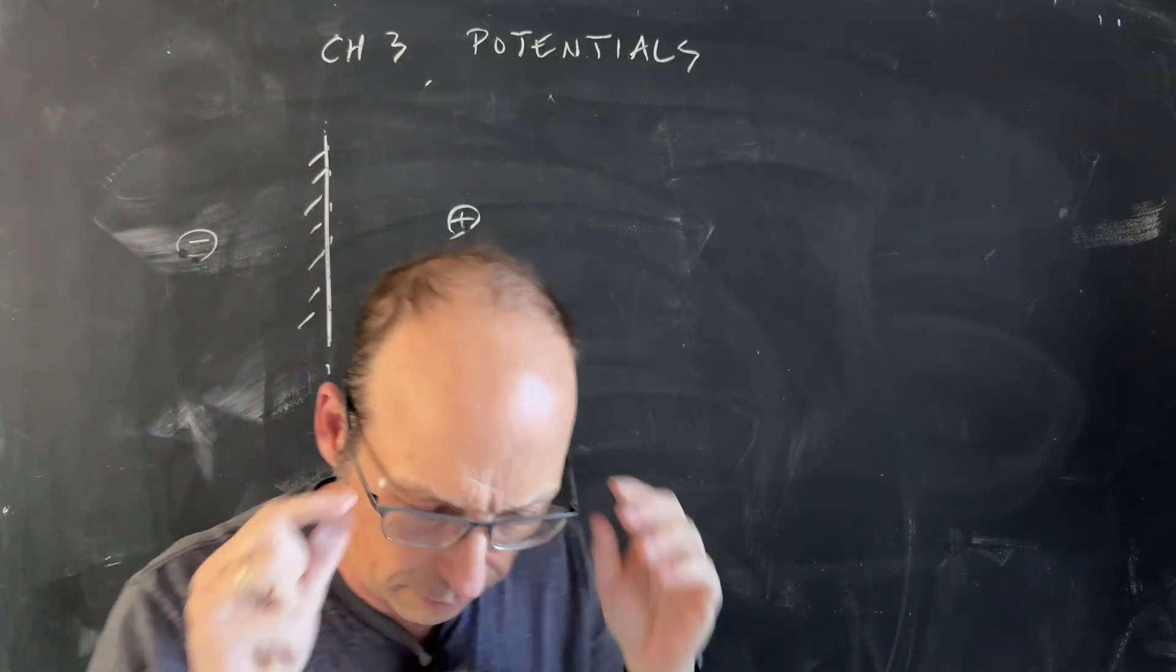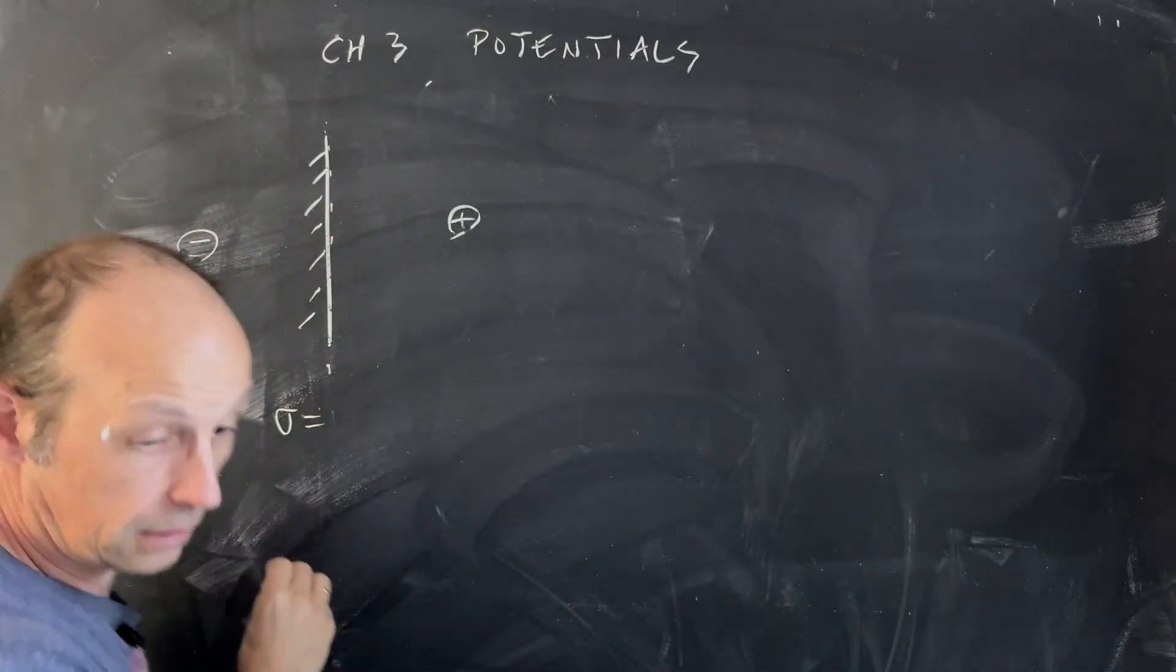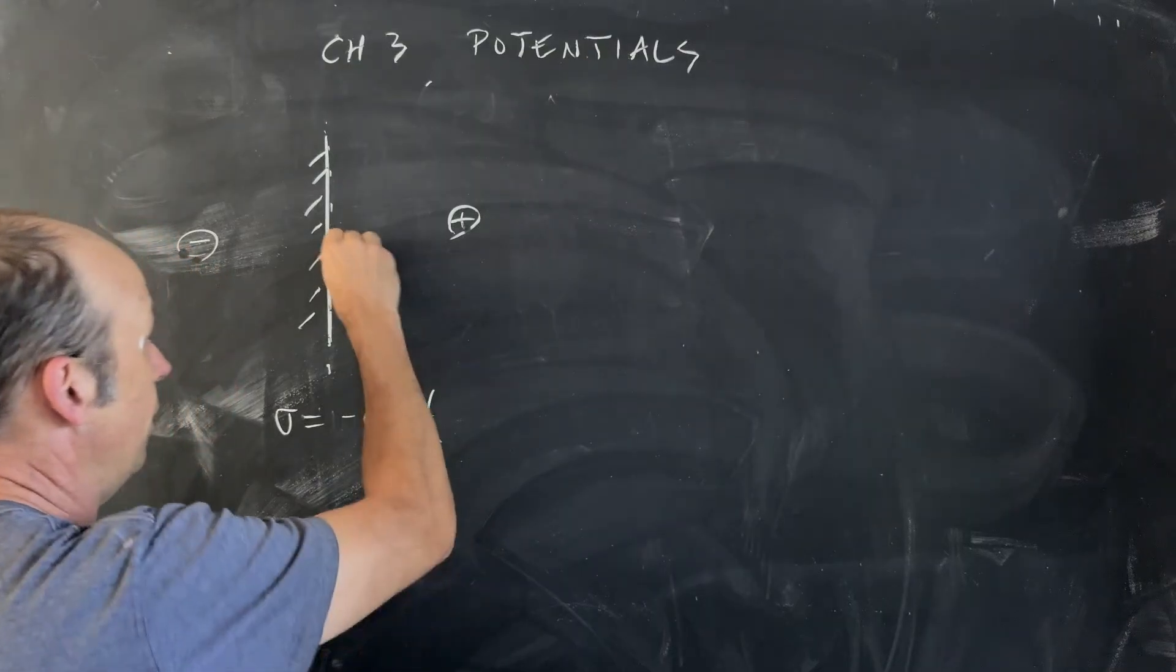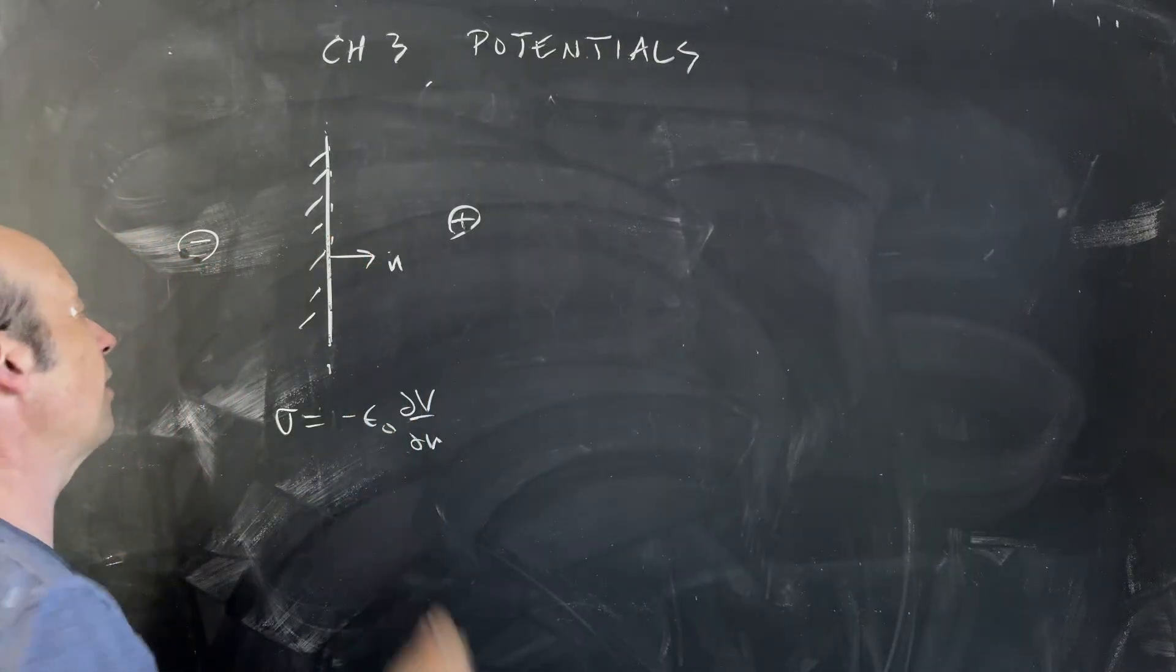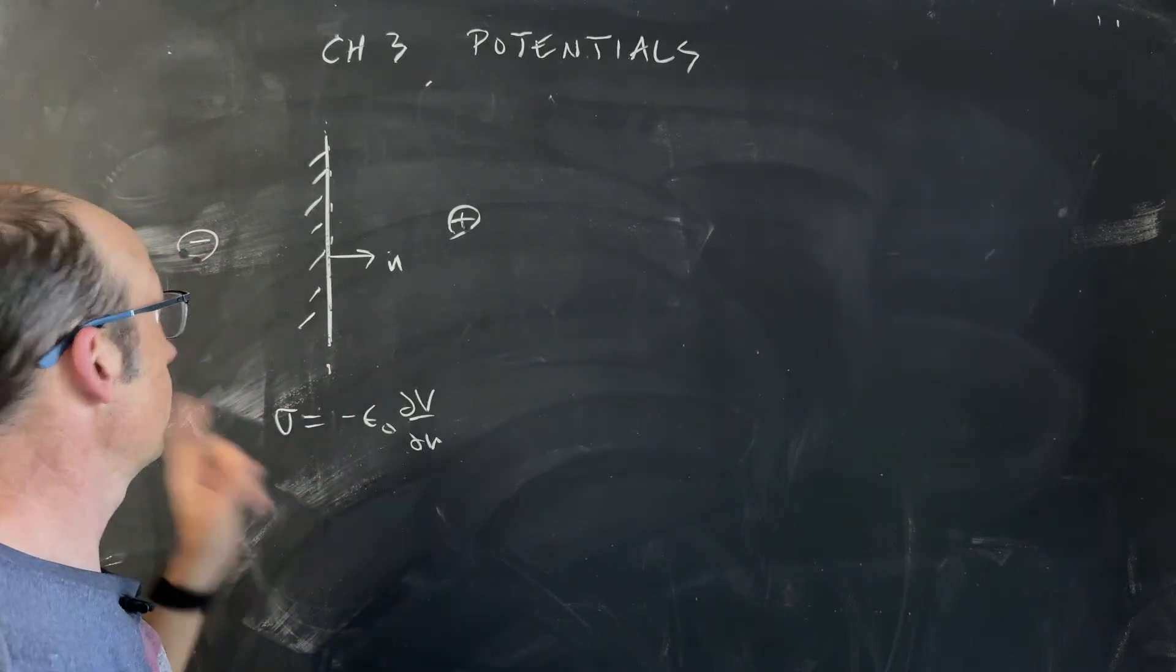Now we can also find expressions for the charge density. The charge density sigma is negative epsilon naught, the partial of V with respect to N. So N is the direction of the surface.